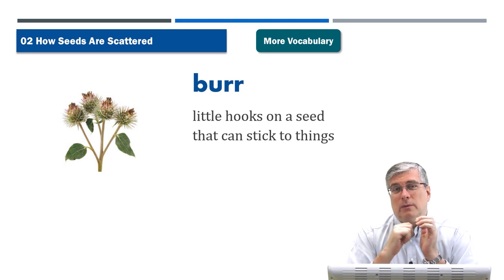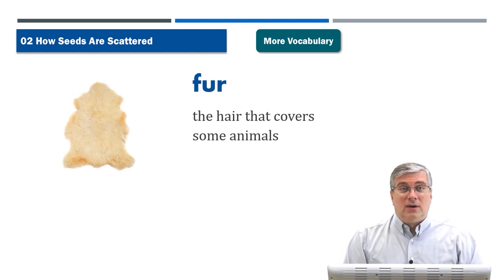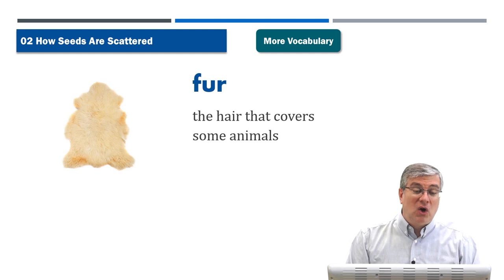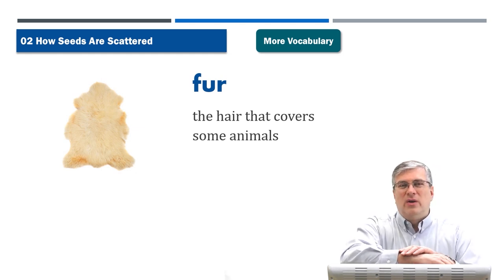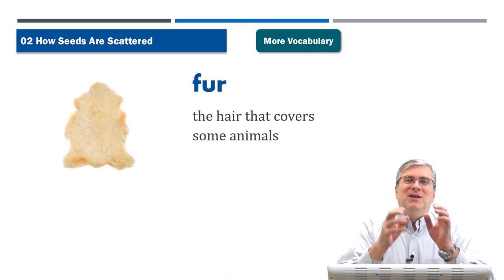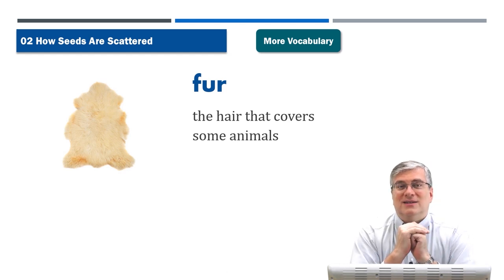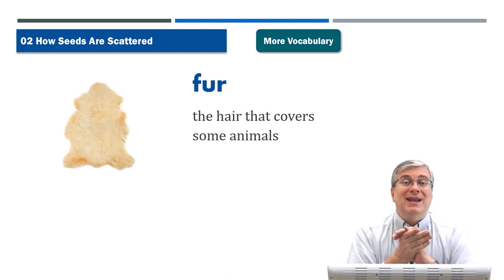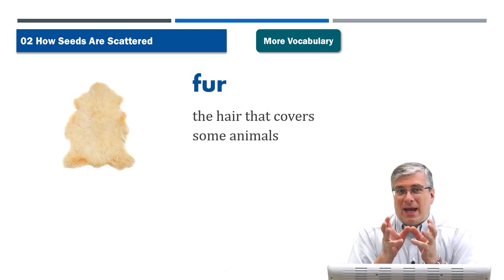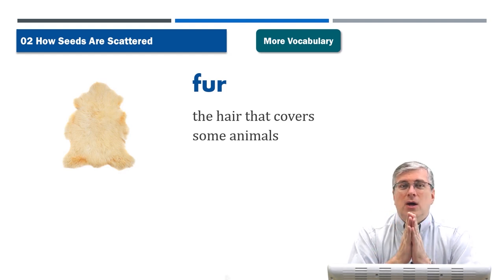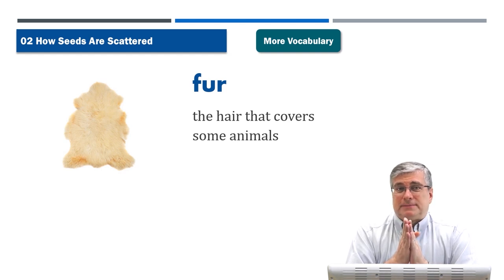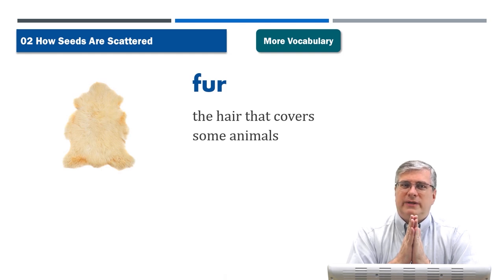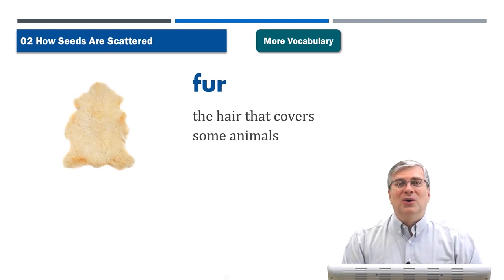'Fur' — we had 'burr,' now we have 'fur.' Fur is the hair that covers some animals. My arms are a little hairy, but don't call this fur — it's not that thick. Fur is when a lot of hair grows very close together and you cannot see the skin underneath. Look at your dog or cat — they have very thick hair growing from their skin; we call that fur. Many animals, especially mammals, have fur. But humans don't have fur.